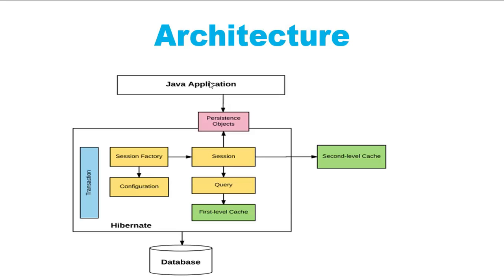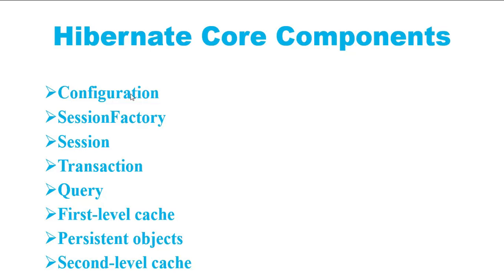Let's look at the Hibernate architecture. Hibernate sits between a Java application and a database. The Java application uses Hibernate APIs to perform database operations. The core components of Hibernate include: Configuration, which is defined in hibernate.properties or hibernate.cfg.xml for XML-based config, or a class annotated with @Configuration for Java-based config. Configuration is used by SessionFactory to work with the Java application and the database.